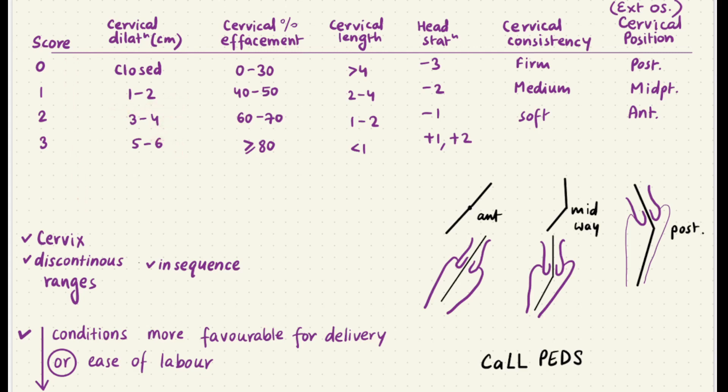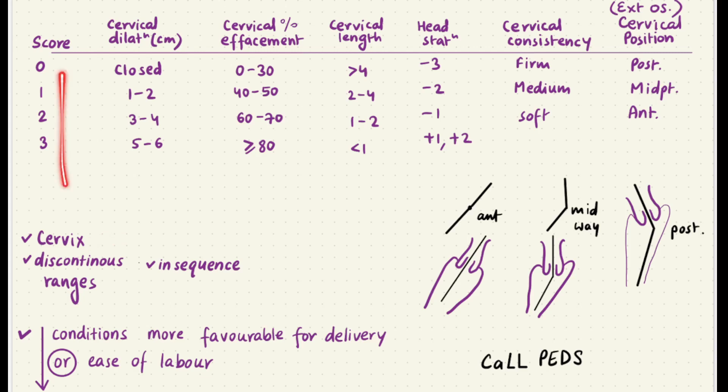The first thing you need to get into your head is that there are almost four points that are only related to the cervix. Bishop's Score is all about conditions that are more favorable for delivery — as the score increases, your favorable conditions for labor basically increase. Everything involves discontinuous ranges.